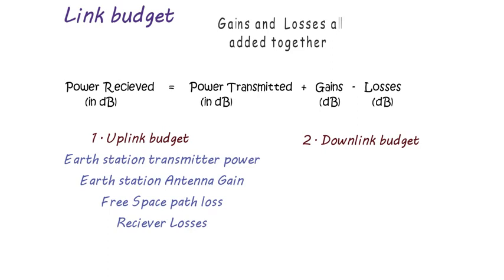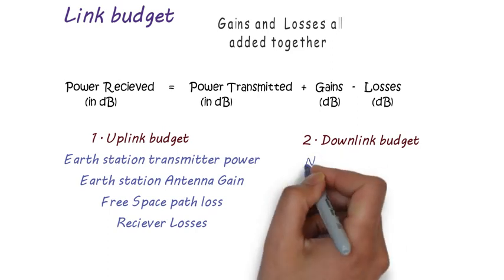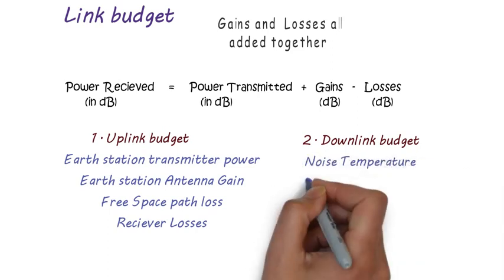In a similar manner, the downlink power budget includes all the parameters which are encountered during wave transmission from space station to earth station. It includes equivalent noise temperature and receiver bandwidth.